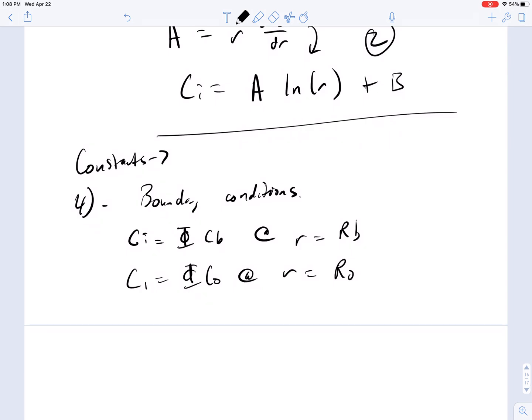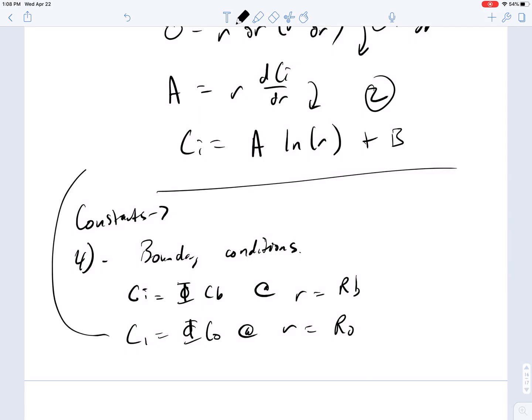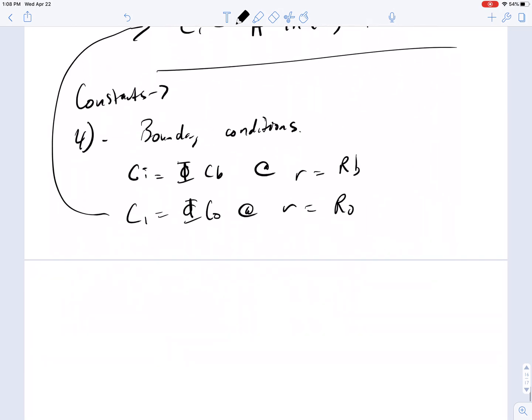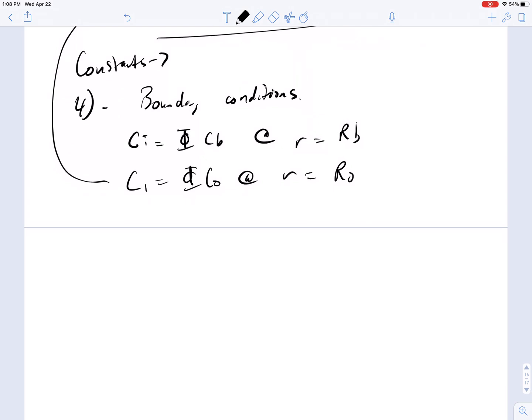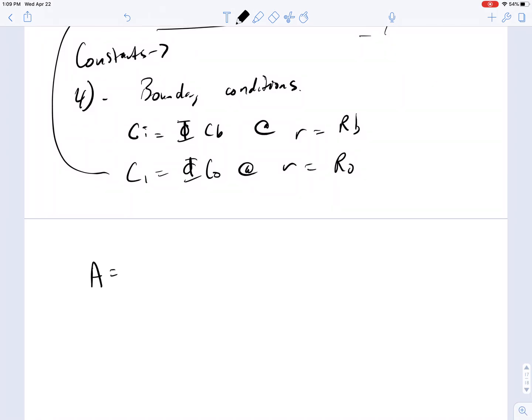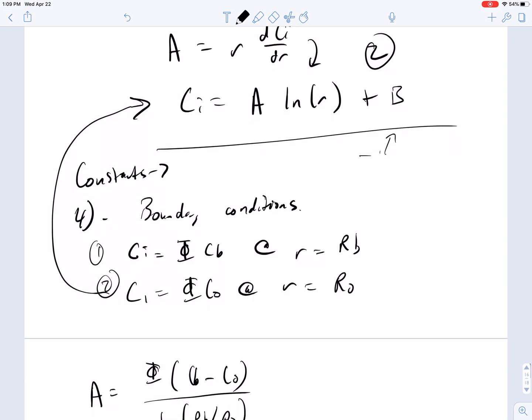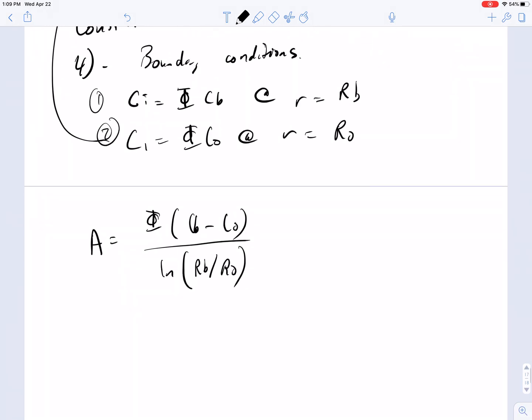So you just plug and chug it. You stick this in for one of these conditions. You stick them into this equation. You start to solve for A and for B. So if we substitute in this relationship for A, and you do both of them, and then you subtract the two equations, and you get rid of B, you end up with A equals φ times (C_B - C_0), all divided by ln(R_B/R_O). So again, let's do that. You just substitute in both 1 and 2, and then you subtract the equations. The B disappears, gives you an equation only in terms of A. You solve for A, and then this is the A that you get.